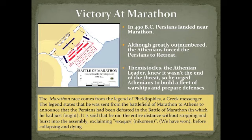At around 490 BC, the Persian troops landed near Marathon, which is just north of Athens. The Athenians asked for help from their neighboring city-states to defeat the Persians, but very few came to help them, so the Athenians were greatly outnumbered. They still, however, managed to force the Persians to retreat. Themistocles, who was the Athenian leader at the time, knew that it really wasn't the end of the threat, and he urged the Athenians to build a fleet of warships and to continue to prepare their defenses.